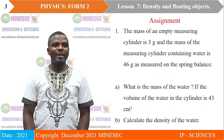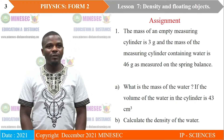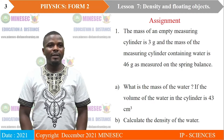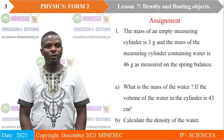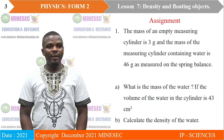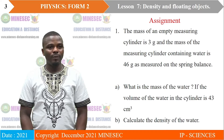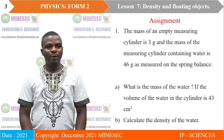Last class, you were given an assignment. Question 1: The mass of an empty measuring cylinder is 3 grams and the mass of the measuring cylinder containing water is 46 grams as measured on a spring balance. A: What is the mass of the water? If the volume of the water in the measuring cylinder is 43 cm³, B: Calculate the density of the water.